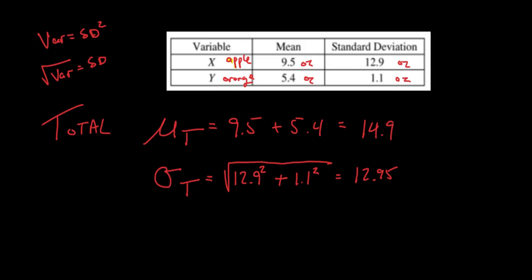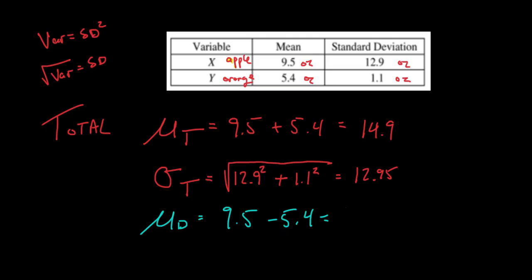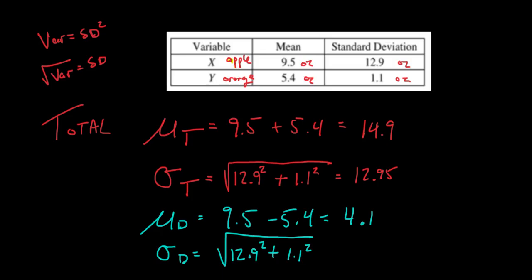What's the difference between the weight of an apple and an orange? Mean difference = 9.5 − 5.4 = 4.1 ounces. For the standard deviation of the difference, here's the key: even though we're subtracting, you still ADD the variances — you're still combining an apple and an orange. Variance always builds up, it never diminishes. So σ_diff = √(12.9² + 1.1²) = 12.95 ounces. This comes up a lot on the AP test.